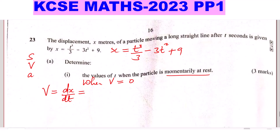When you differentiate t cubed over 3, you get t squared. Then for 3t squared, you differentiate that and get 6t. For 9, you get 0. So therefore, velocity is given by t squared minus 6t.